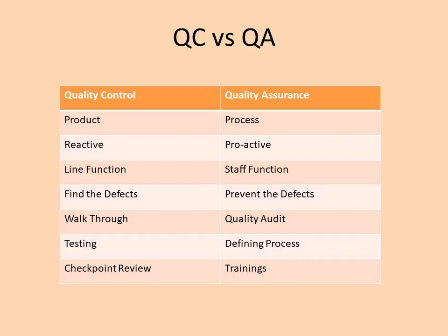Quality assurance can be defined as the activities for ensuring quality in the processes by which products are developed. Quality control is reactive while quality assurance is proactive. Quality control is about detecting defects in a product already produced, while quality assurance is about improving processes to prevent those defects.